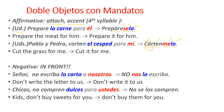Now, negative commands — you can't forget, they go in front. Señor, no escriba la carta a nosotros — don't write the letter to us. Don't write it to us. So: no, nos for indirect, la for la carta, escriba. The double object is between no and the verb — the sandwich. Chicos, no compren dulces para ustedes — don't buy sweets for yourselves. Don't buy them for yourselves. So: no, se — because I cannot say les with los — los compren.